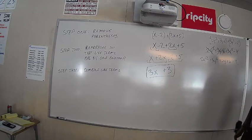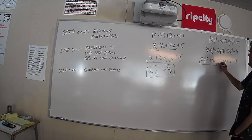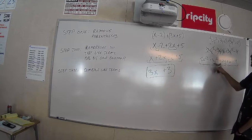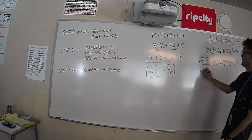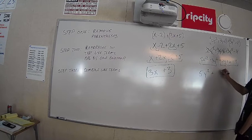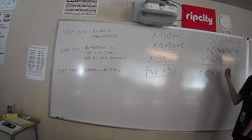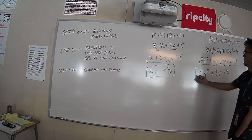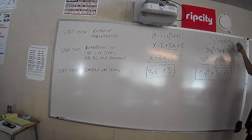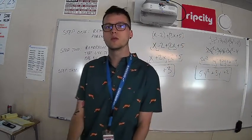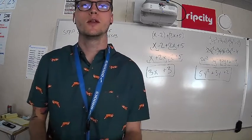Step three, combine like terms: 2y squared plus 3y squared gives 5y squared. There are no other y terms, so 3y stays as 3y. And 6 minus 4 equals 2. When we add the trinomial and the binomial together, we get 5y squared plus 3y plus 2. That's adding polynomials in a nutshell — go ahead and check out those practice problems and let me know if you have questions.